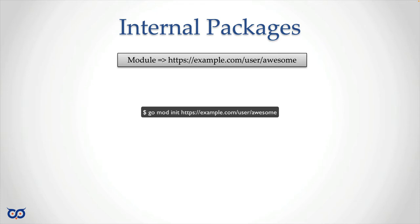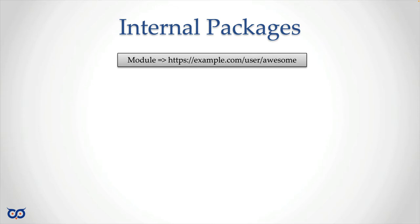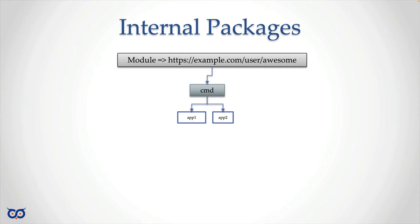The go.mod file will show 'module' followed by that path. A module is a collection of packages. Those packages can represent an application or just pieces of code you can reuse and pull into an application — we talked about this a few videos back. Let's say within this module I have an application, so I create a command directory with two commands — two executable applications: app1 and app2. Each one of these applications is going to have a main.go file.